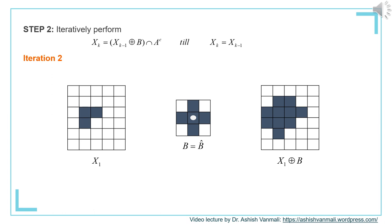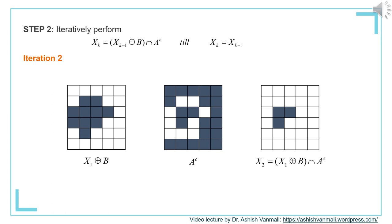In iteration 2, we are going to dilate X_1 with B. You can see X_1 in the first image and B in the second. The corresponding result of dilation is in the third image, where we have expanded the components of X_1 in the four neighbors direction. We then take the intersection of X_1 dilated with B and A complement. The result of this intersection is shown in the third figure, and that is our X_2.